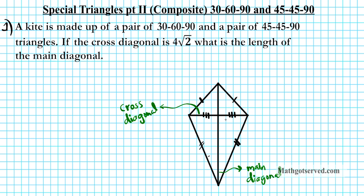What do we know about the triangles? If one pair is 30-60-90 and the other is 45-45-90, looking at the triangle on top it's easy to see that it is in fact the 45-45-90 pair. This angle is 45 degrees, this angle is 45, and this is 90 degrees. So this is a 45-45-90 triangle, meaning this side is congruent to that side — it's an isosceles right triangle.